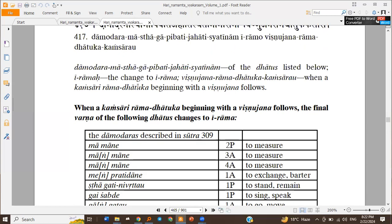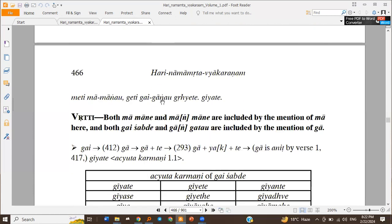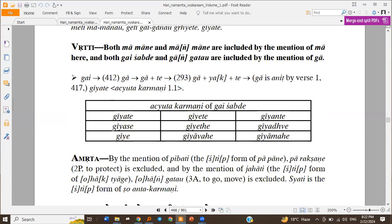So Kai Ga plus Te Yak. Now Yak is Kansari, it's beginning with Vishnujana Ramadhatuka, so this R changes to E, so we get Giyate. And so on, Diyate Giyate.